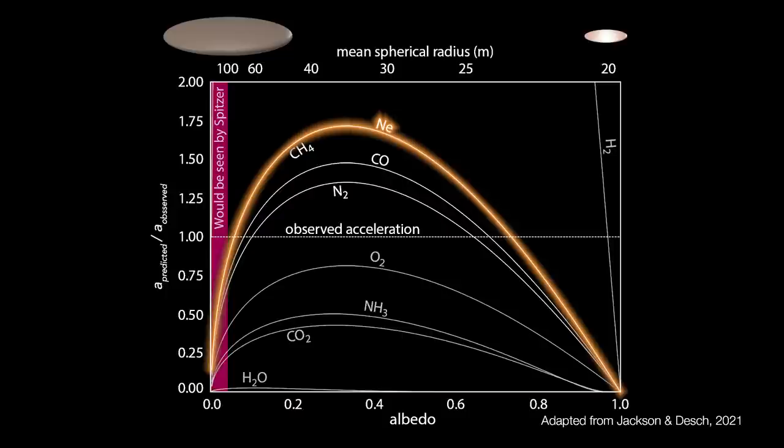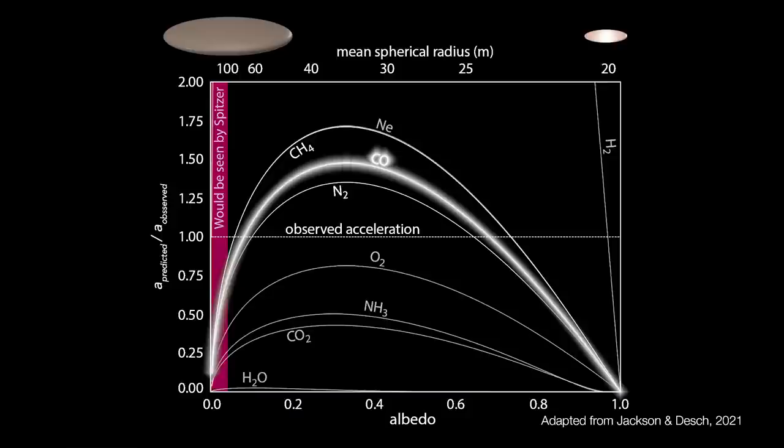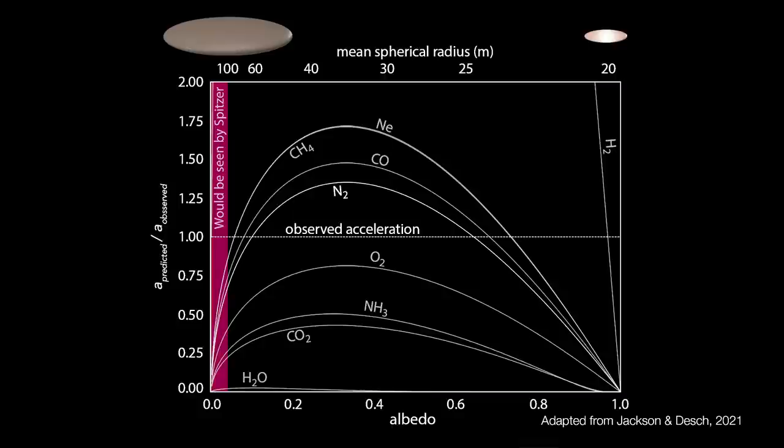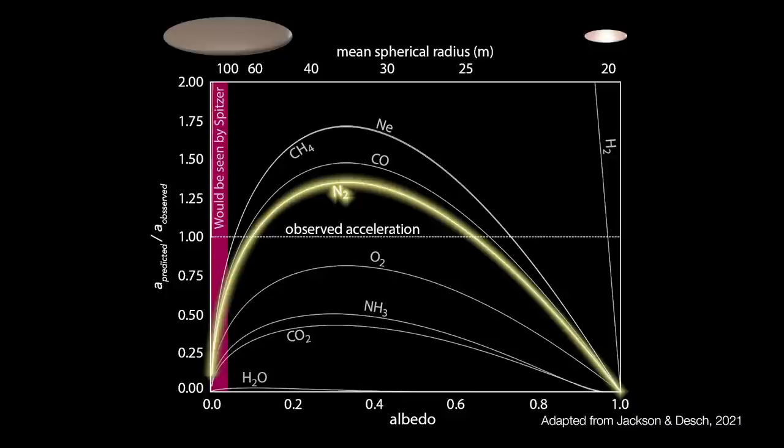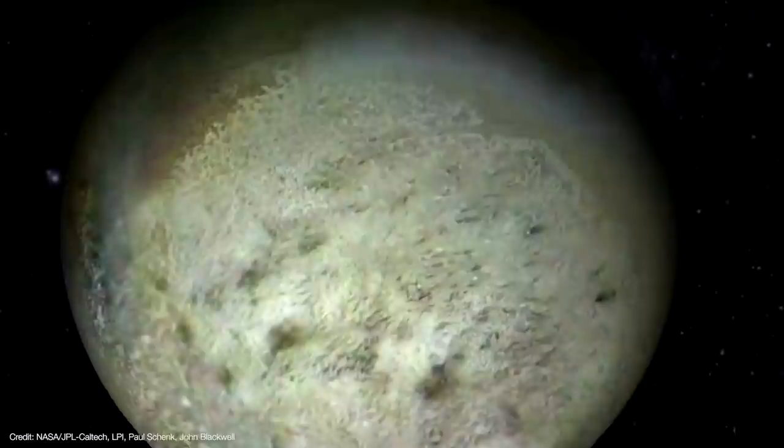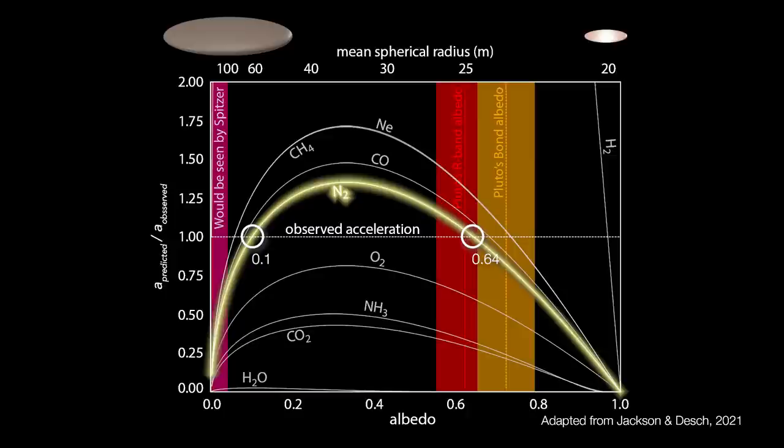Neon sublimates at just 9 Kelvin, so Oumuamua would have lost its neon ice long before it even arrived in the solar system. Carbon monoxide is ruled out because its sublimation temperature is high enough that Spitzer likely would have seen it. Methane ices are a thing, and we've detected them on Pluto, but only in trace amounts. And the methane that we have found on Pluto was dissolved in nitrogen ice. But nitrogen ice, on the other hand, exists in large quantities on Pluto. In fact, the large Sputnik Basin is a sea of rolling dunes of nitrogen ice. It's also found on Neptune's moon Triton and in other Kuiper Belt objects. And it can give Oumuamua the right acceleration in two circumstances.